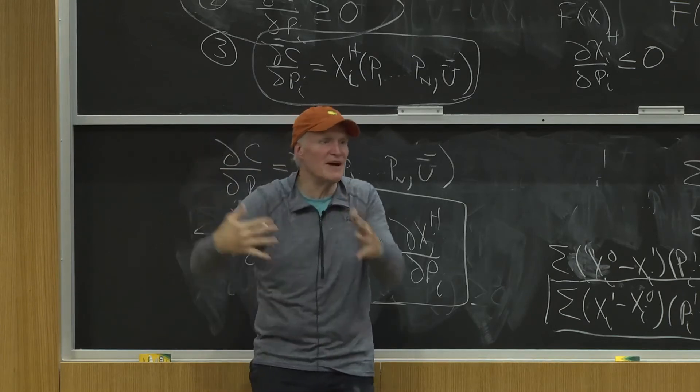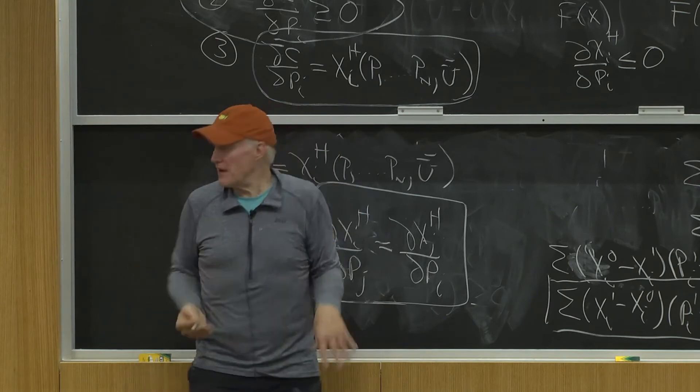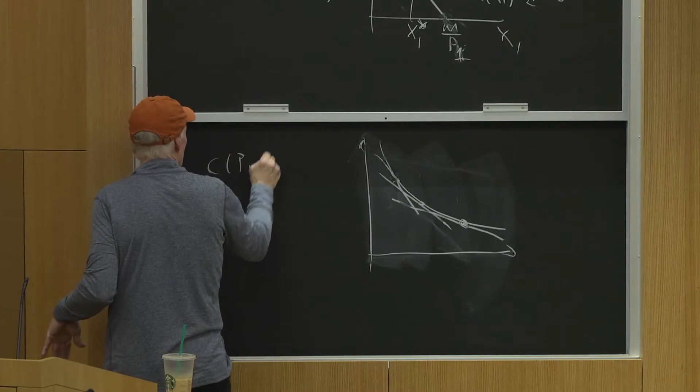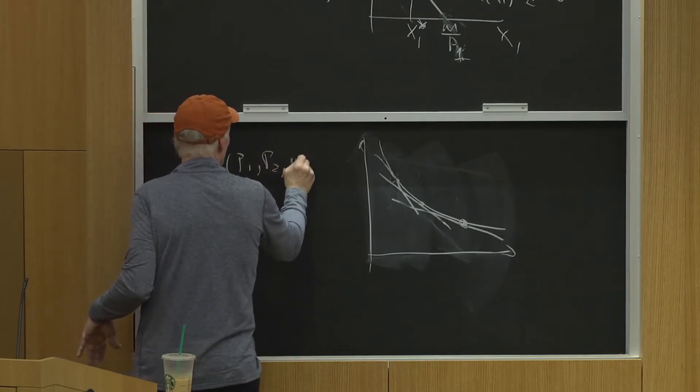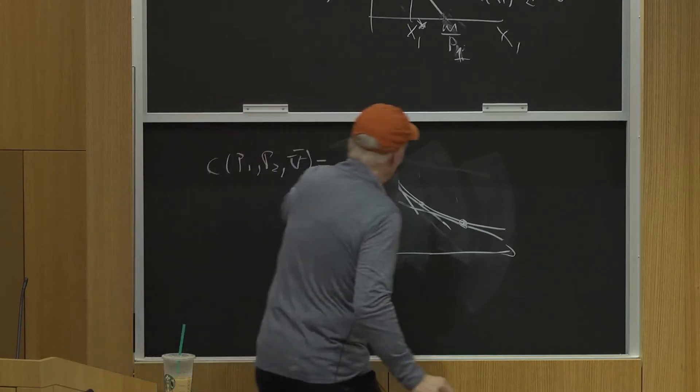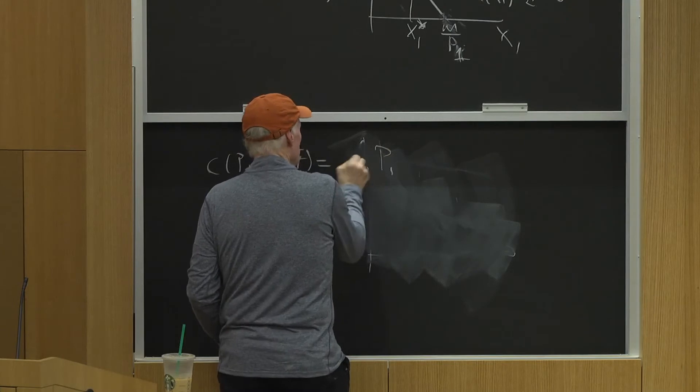So if somebody writes down a cost function, and they say, here's my cost function. C of P1, P2, mu bar, equals A of U,